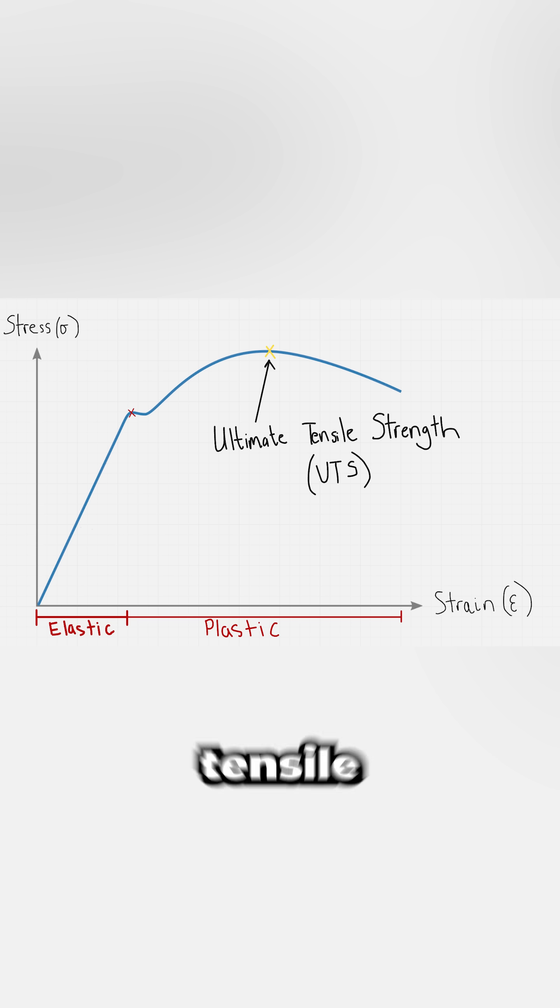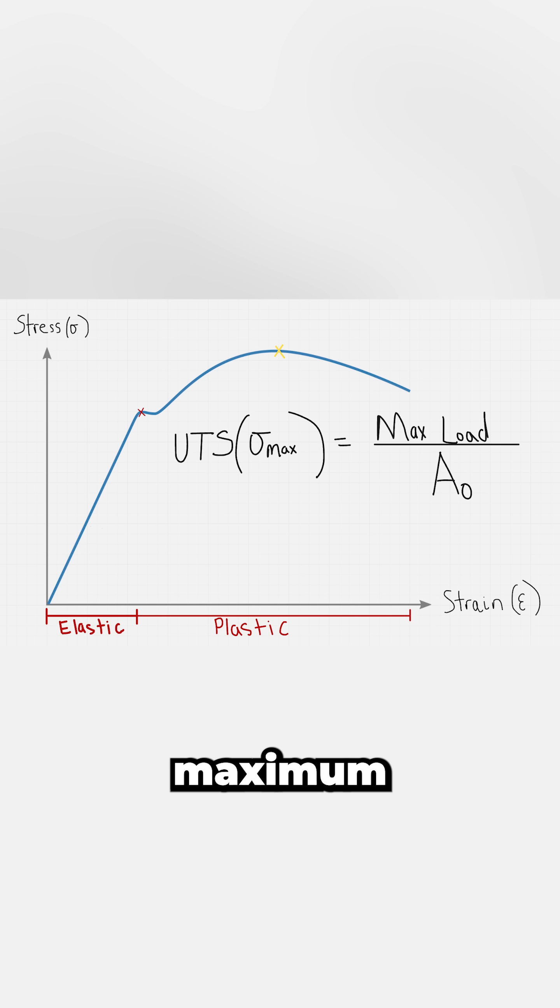The peak of this curve is called the ultimate tensile strength. This is the maximum engineering stress, which is the highest load the material can handle divided by its original area.